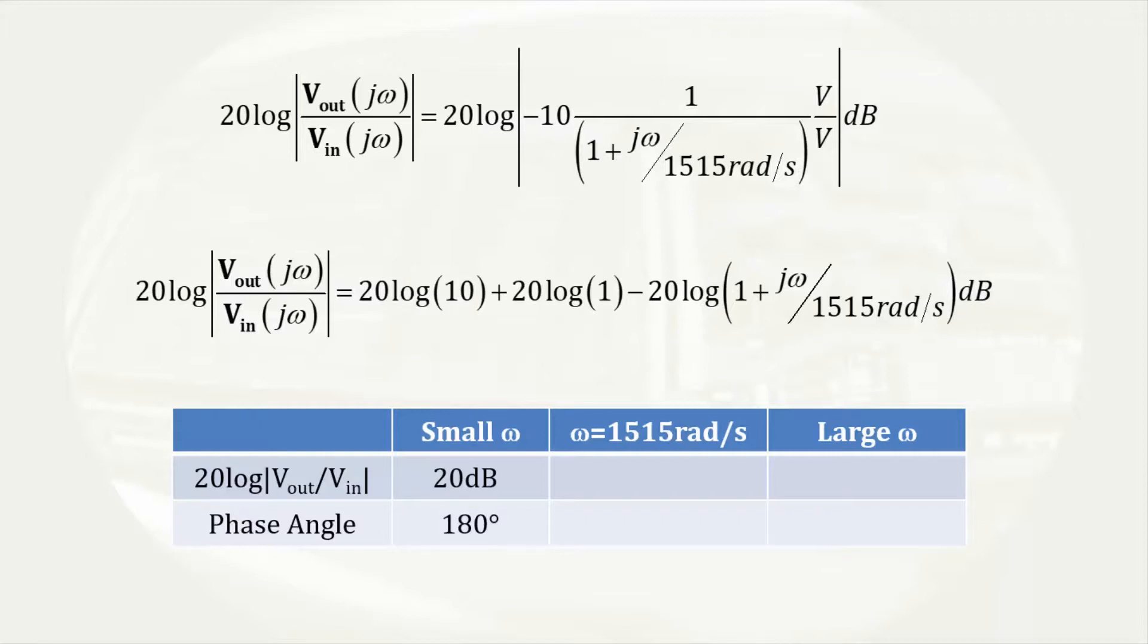When omega is equal to 1515 radians per second, we have 20 times the log of 10 minus 20 times the log of the square root of 2, as the square root of 2 is the magnitude of the complex number. This results in a decibel magnitude of approximately 17 decibels, or a drop of 3 decibels. The phase angle is as before 135 degrees.